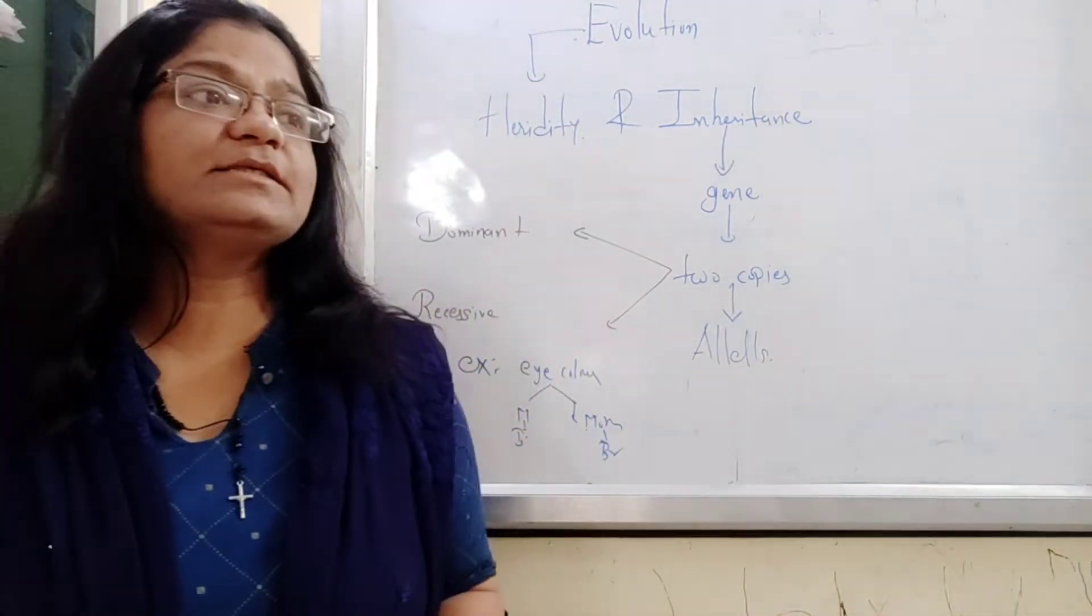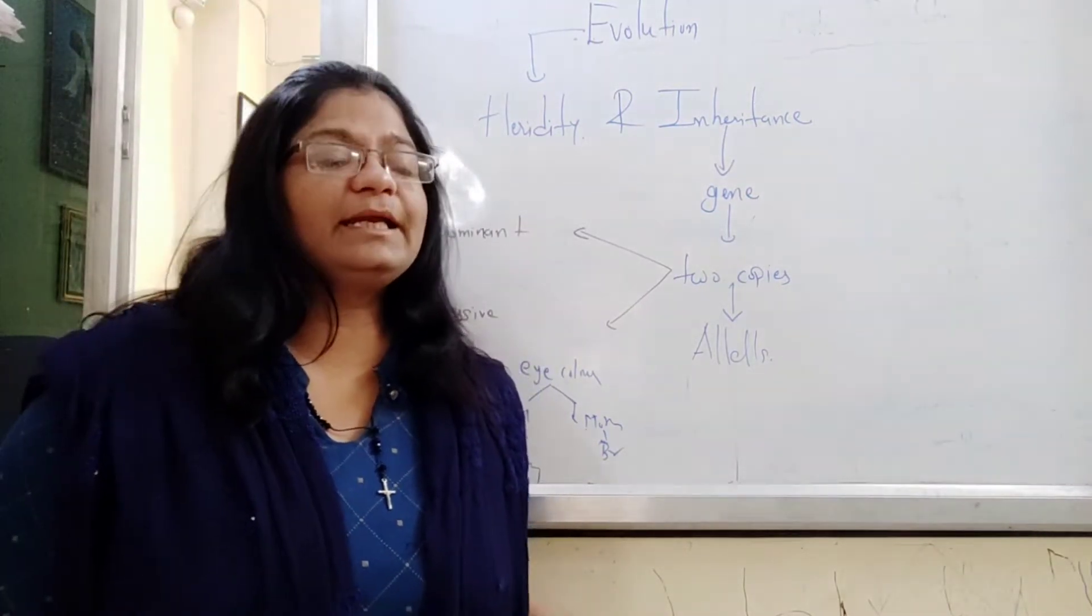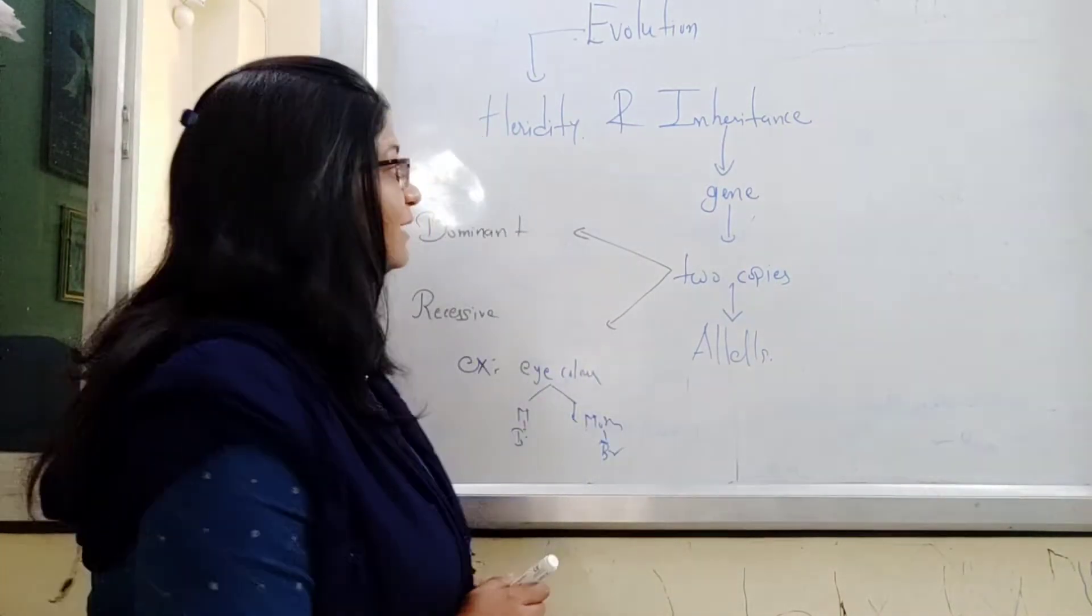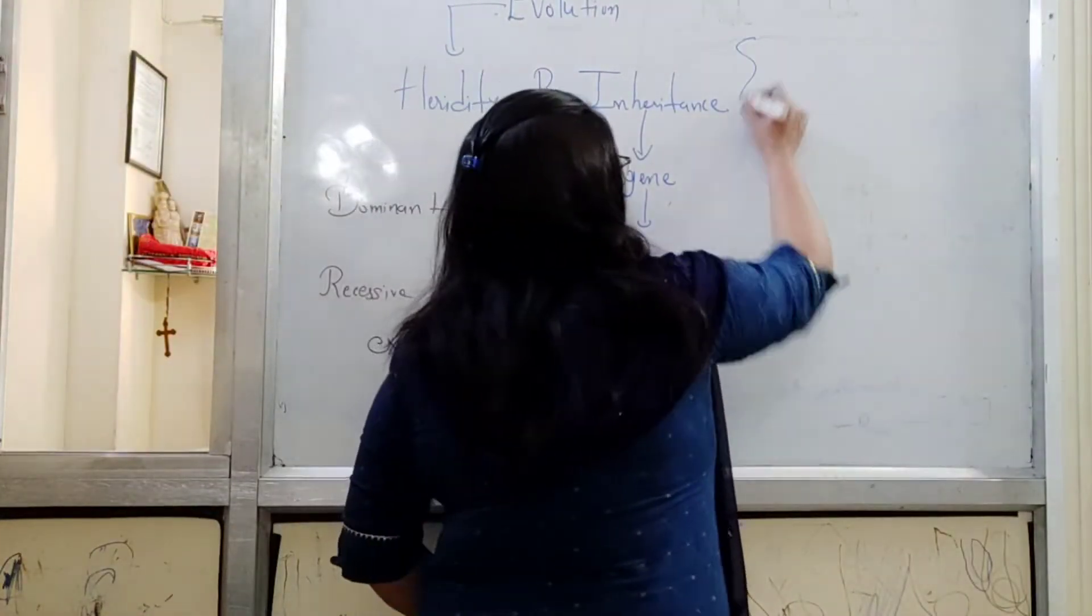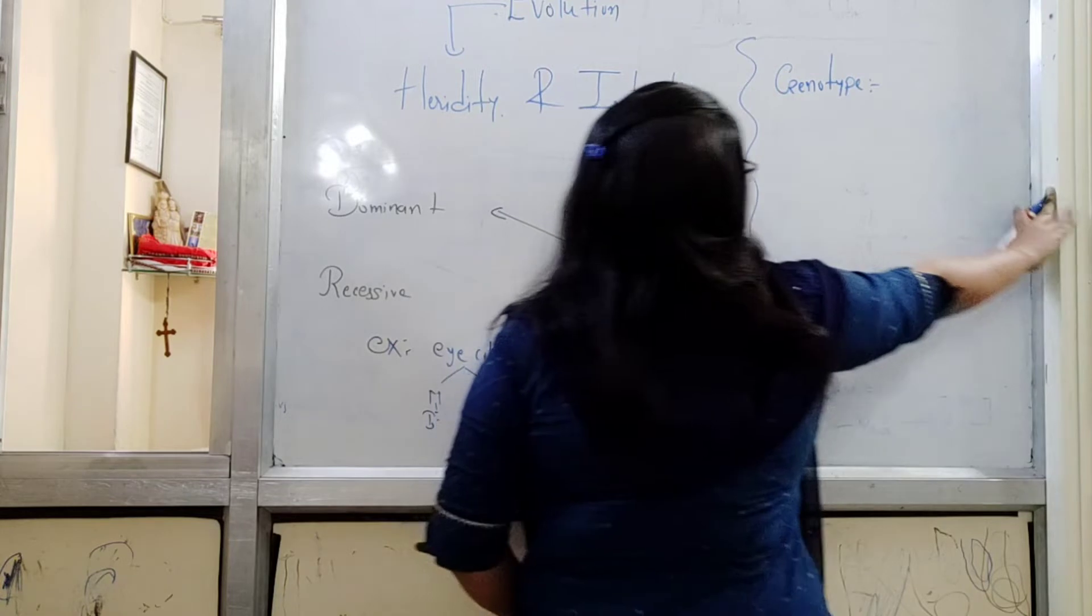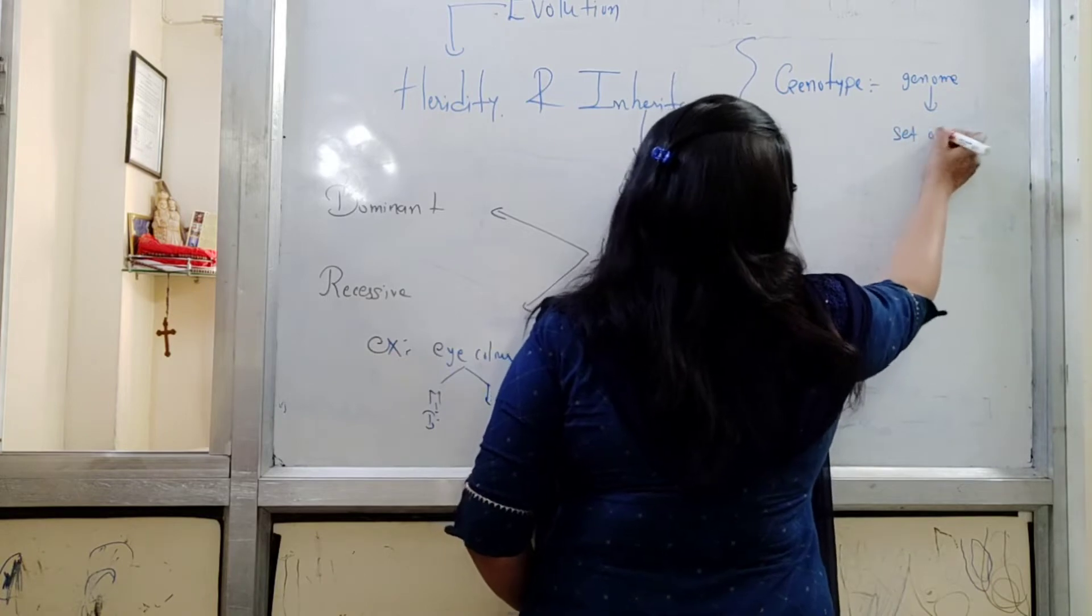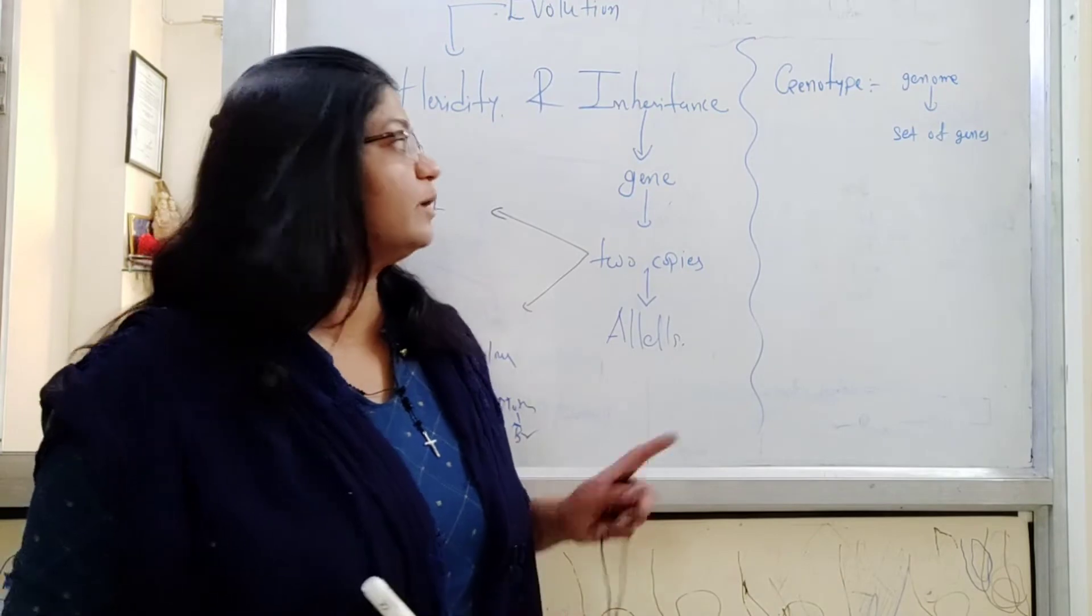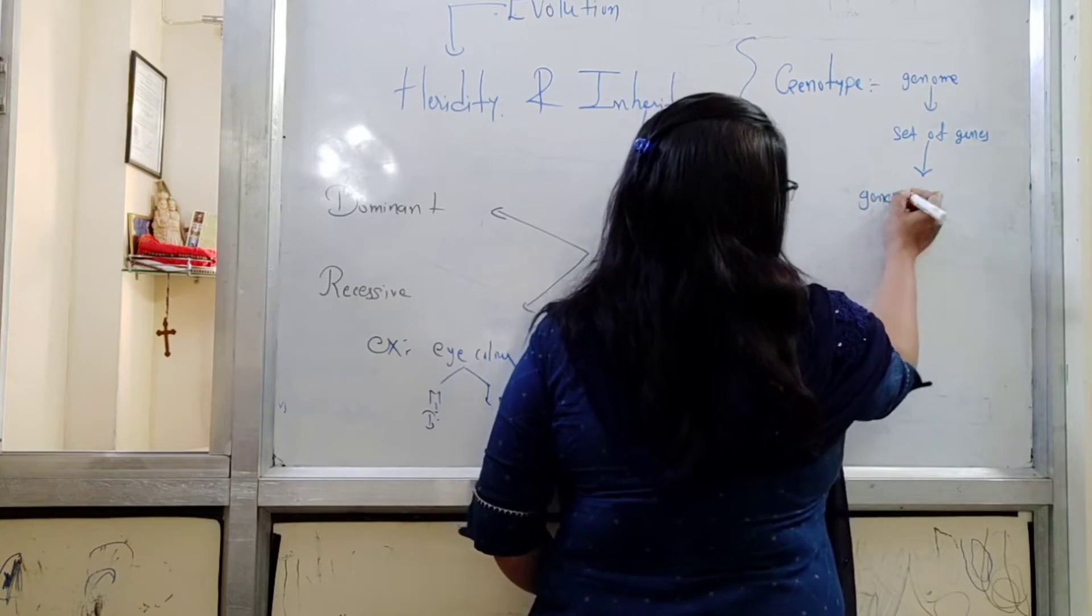Okay, so this many things are about the alleles. Now the characters - two types of character any individuals are having: those are genotypic character and phenotypic character, means that we call genotype and phenotype. Genotype is due to genome. Genome is the set of all genes - all the genes present in individual's body are called genome, and genome will exhibit your genetic characters.